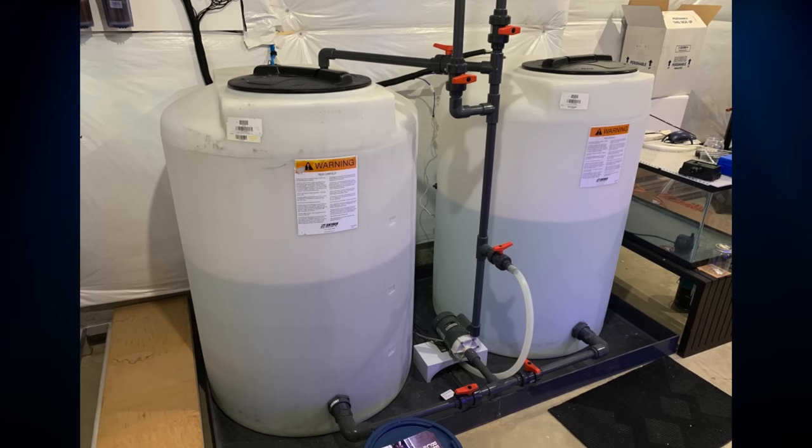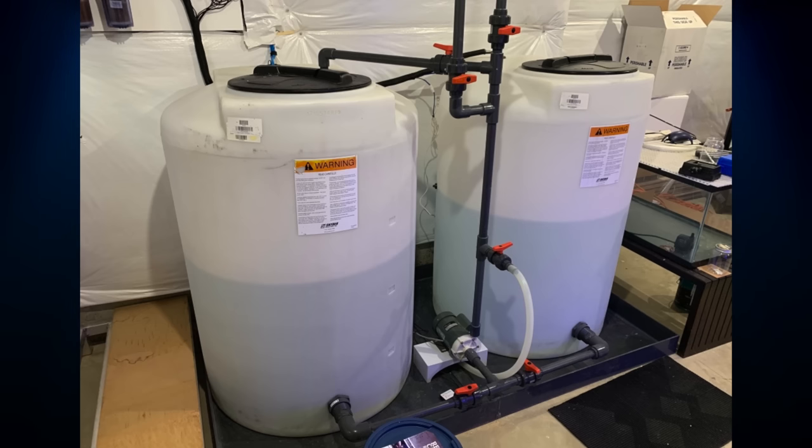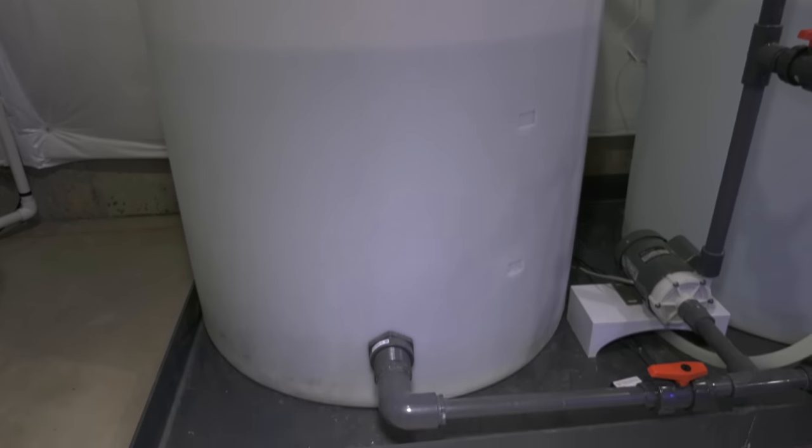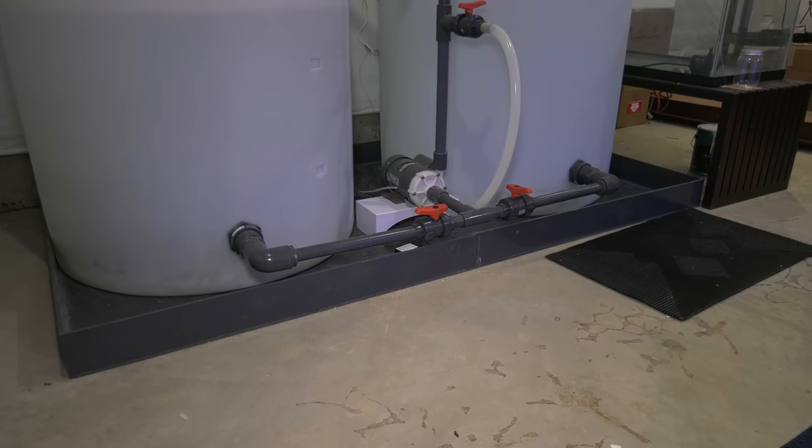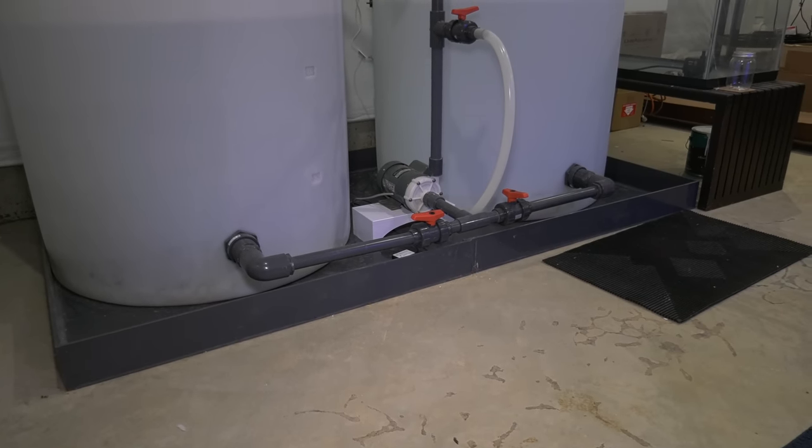The mixing station is comprised of equal-sized RODI and saltwater mixing containers. Each of these containers hold 200 gallons of water. The containers sit in a drip tray even though the floor is concrete and there's a floor drain nearby. Why? Because I want to contain any spills. Seeing water in a drip tray is one thing. Seeing water all over the floor, that's completely different.